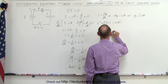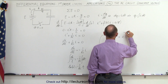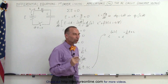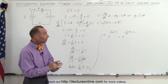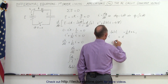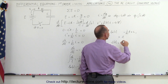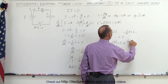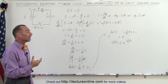Exponentiating both sides, e raised to the natural log of I equals e raised to minus 1 over RC times t plus C1, where C1 is our constant of integration. On the left side, the natural log negates the exponential so we get I as a function of time equals C times e to the minus 1 over RC times t, where C equals e to the C1.